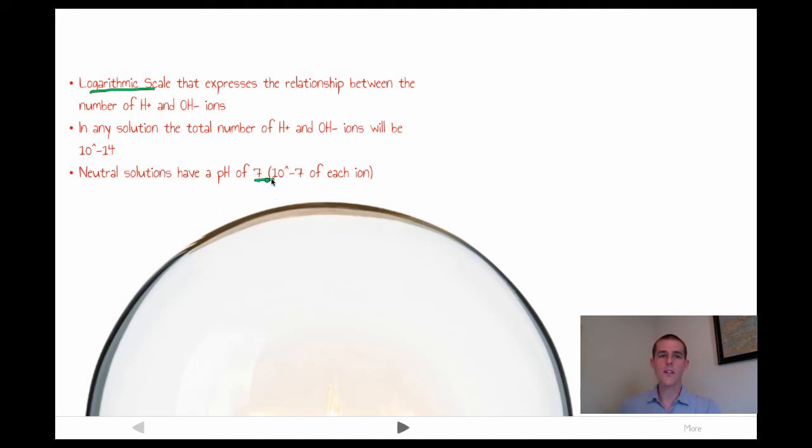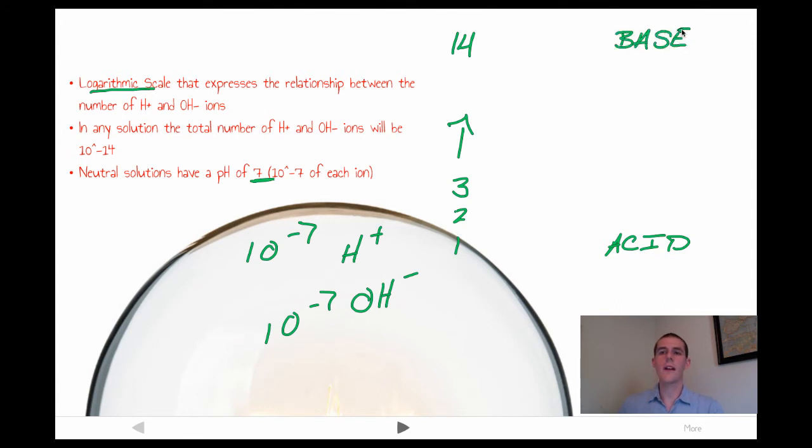That means in a neutral pH of 7, in a solution that has a neutral pH of 7, you have got 10 to the negative 7th hydronium, 10 to the negative 7th hydroxide. They are even and in balance with one another. Your pH scale goes from 1 all the way up to 14. If you are down on this end, you have an acid, and if you're all the way up on this end, you have got a base.